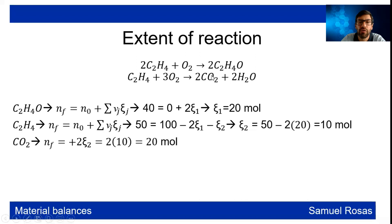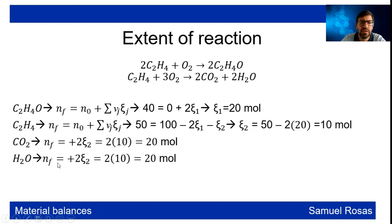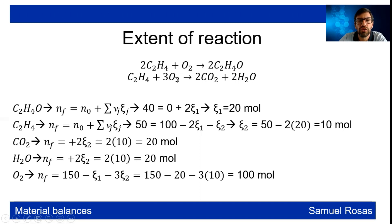Now we can find the moles of CO₂ formed: final moles = 0 plus 2 times ξ₂ (the advance of reaction 2), giving 2 × 10 = 20 moles of CO₂. For H₂O, it appears in the same reaction with the same stoichiometric coefficient, so it also gives 20 moles. For oxygen, consumed in both reactions: 150 minus 1 times ξ₁ minus 3 times ξ₂ = 150 − 20 − 30 = 100 moles remaining.